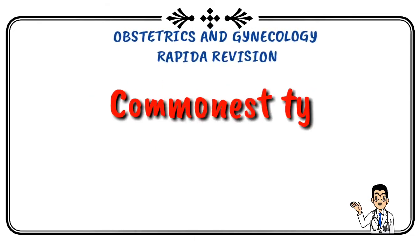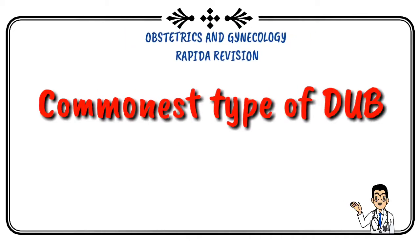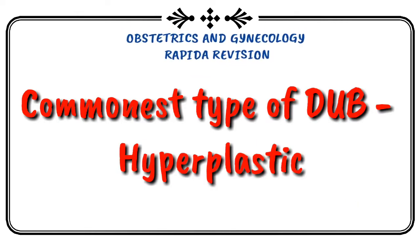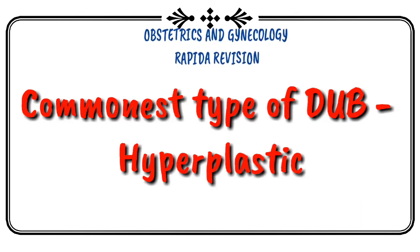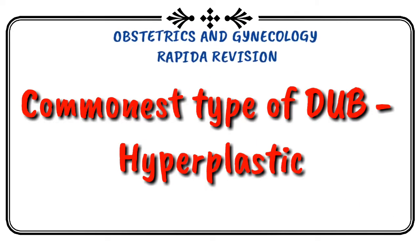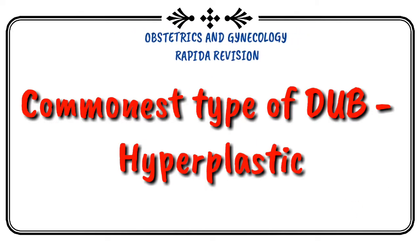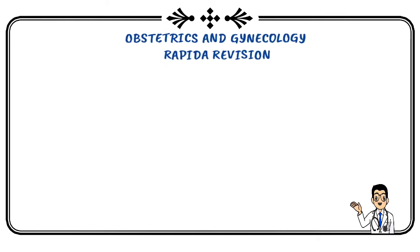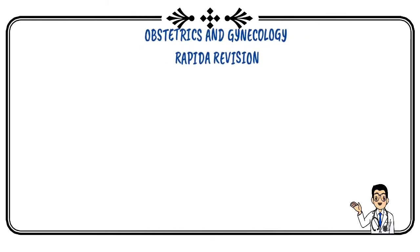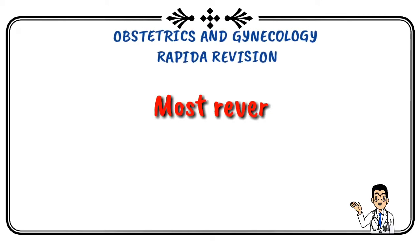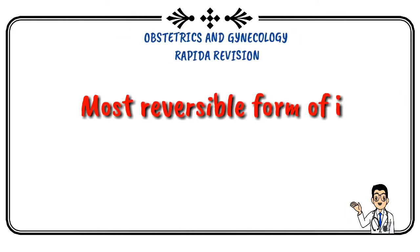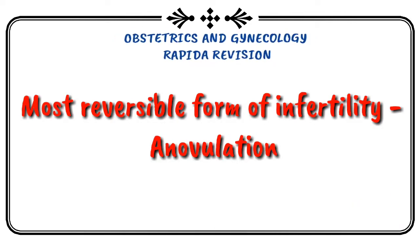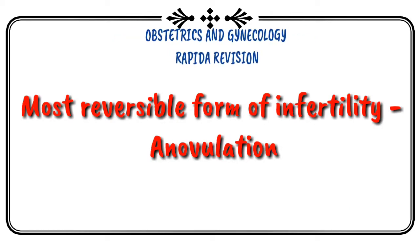Commonest type of dysfunctional uterine bleeding is hyperplastic type. Most reversible form of infertility is anovulation.